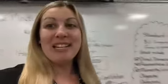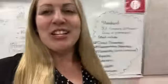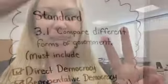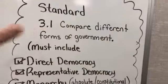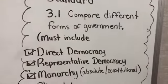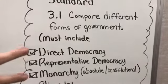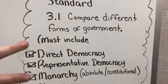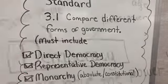Welcome back to 2-Minute Civics. Today we're going to be learning about two types of governments — 3.1, comparing different forms of government. But today we're just going to focus on democracy versus monarchy.